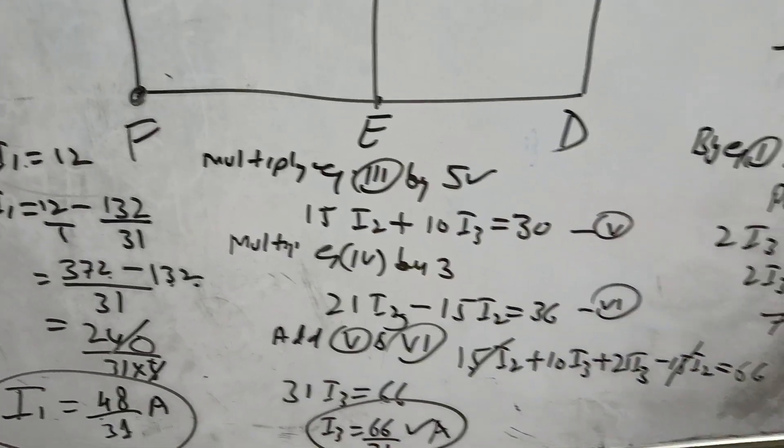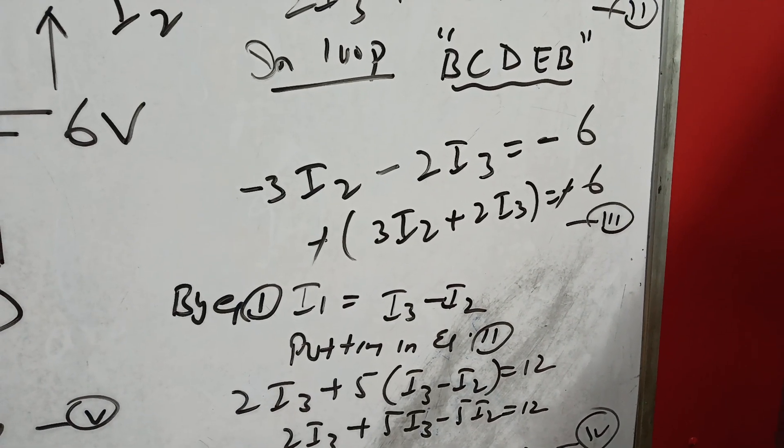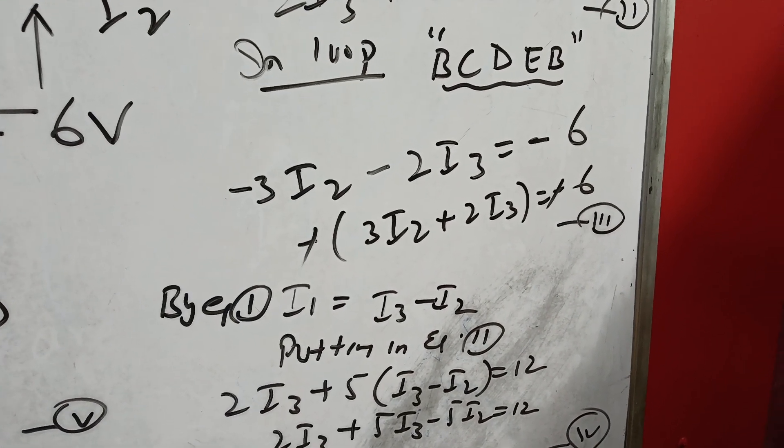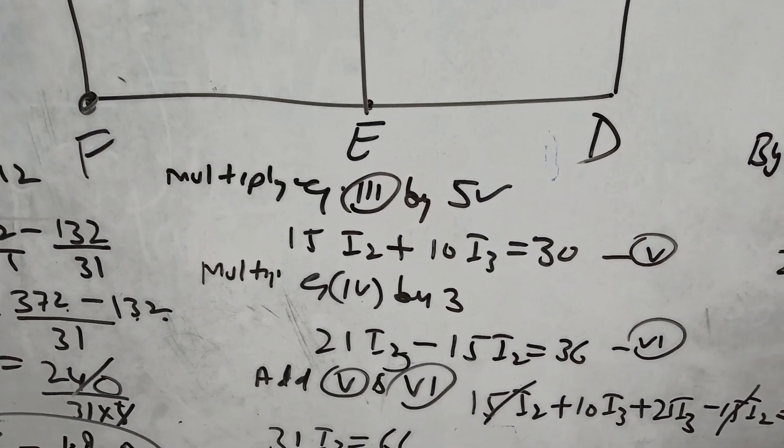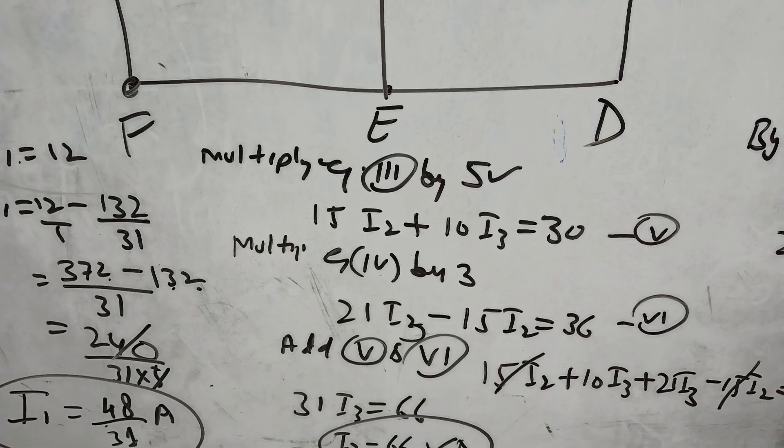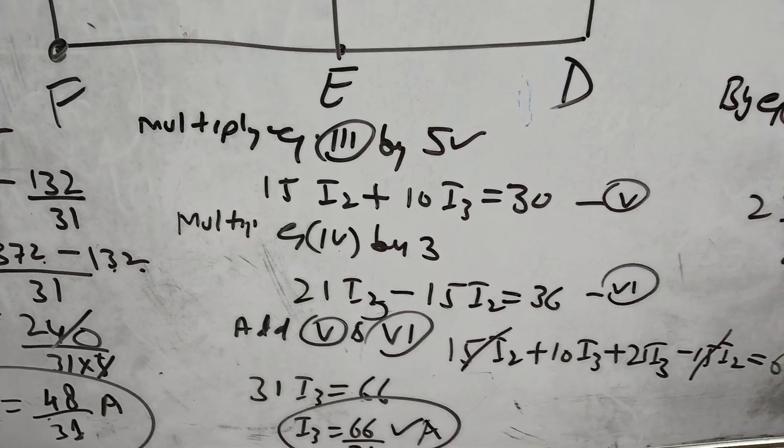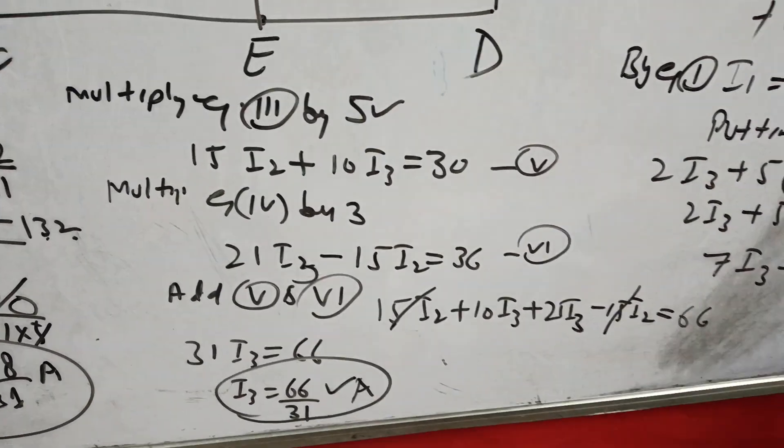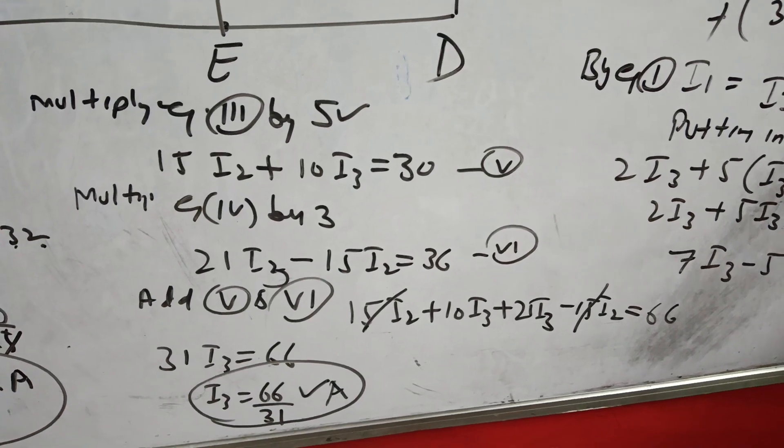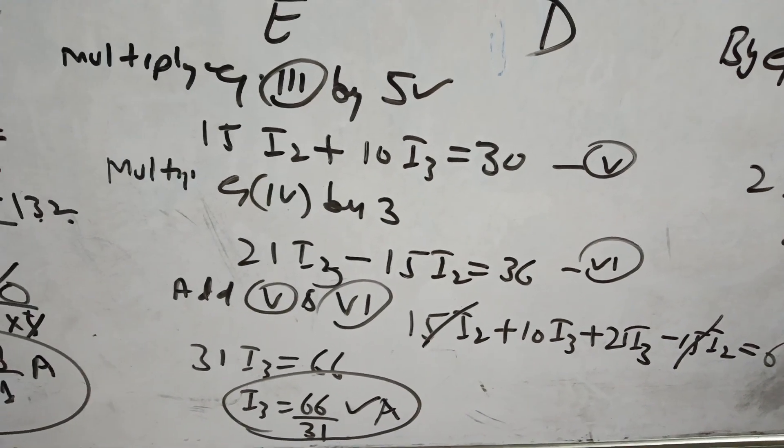Now we will multiply equation 3 by 5. Equation 3, which is 3I2 plus 2I3 equals 6, if we multiply by 5, we will get 15I2 plus 10I3 equals 30. In the same way, equation 4, we will multiply by 3, we will get 21I3 minus 15I2 equals 36. Now we will add equations 5 and 6, and I2 will cancel out and the value of I3 comes out to be 66 upon 31.